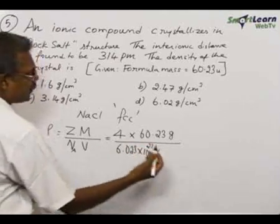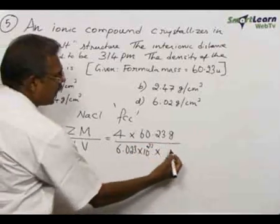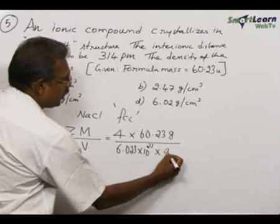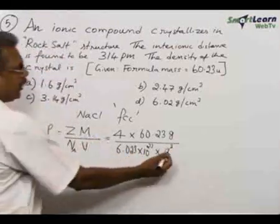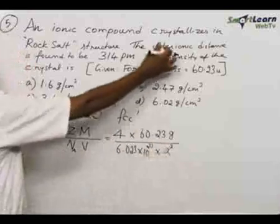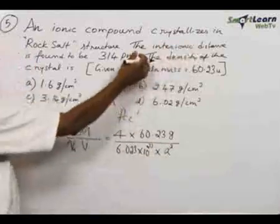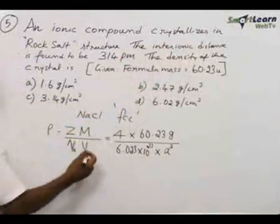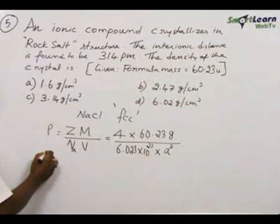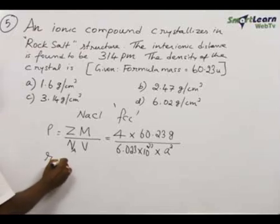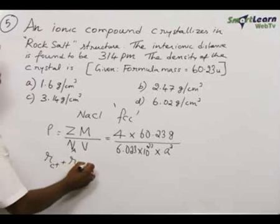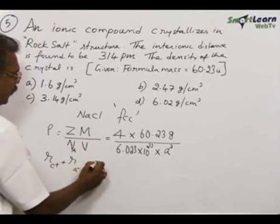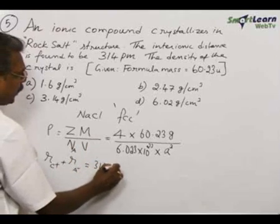The volume for a cubic unit cell must be a cube, so we need to calculate the lattice parameter a. For the calculation of a, the inter-ionic distance is given. The inter-ionic distance is r_cation + r_anion, which is given as 314 pm.